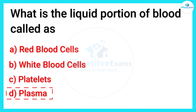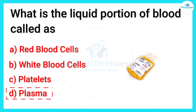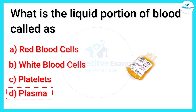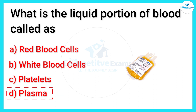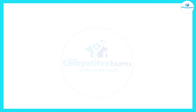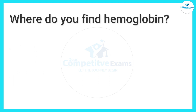Plasma! Friends, plasma is the liquid component of blood that carries cells, nutrients, hormones, and waste products. So the right answer is plasma, the liquid portion of blood. Next: where do we find hemoglobin?